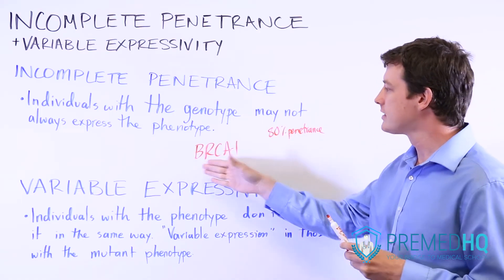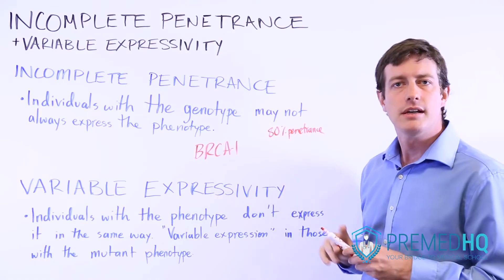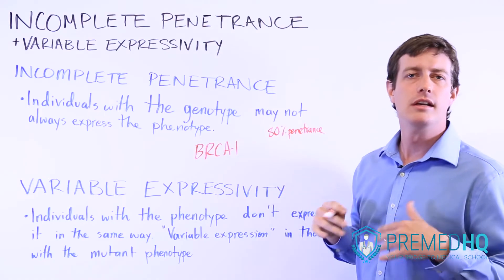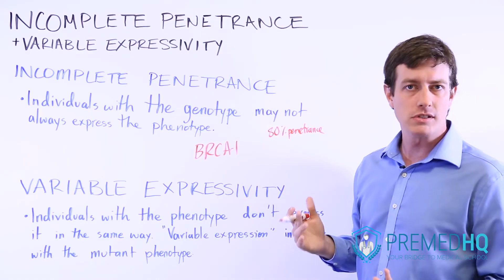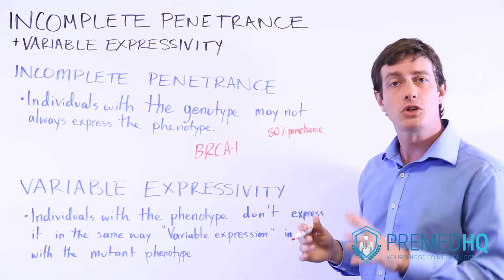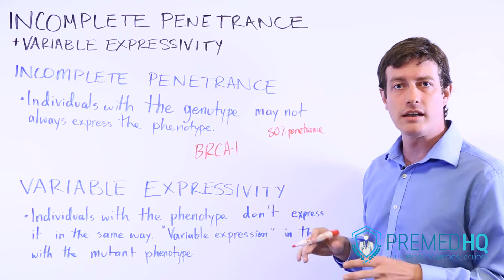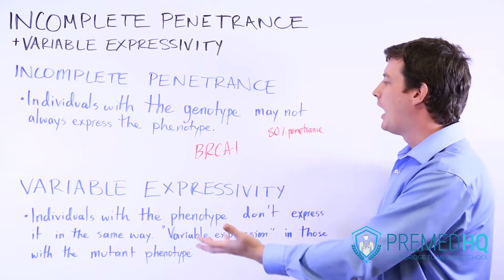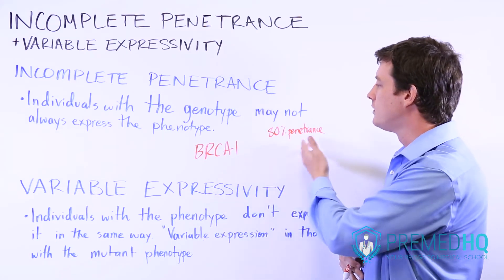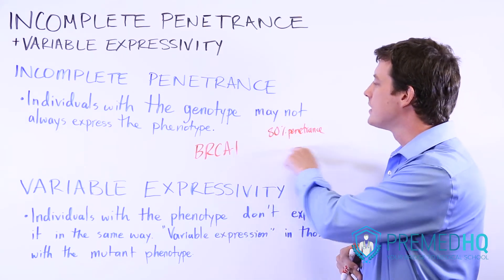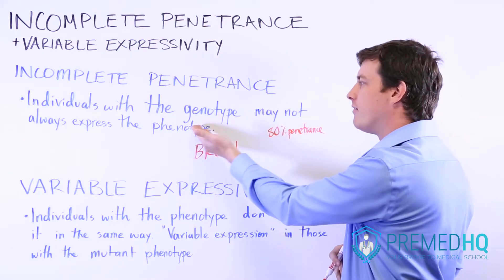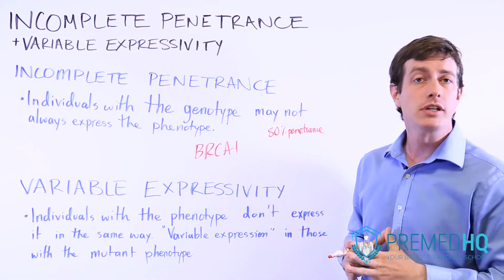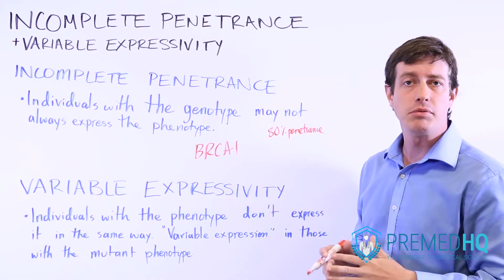Notice that the BRCA1 figure is a lifetime penetrance. Penetrance can be listed throughout a person's lifetime, and usually that's how it's done — throughout a lifespan, how often will someone exhibit the phenotype if they have that genotype.